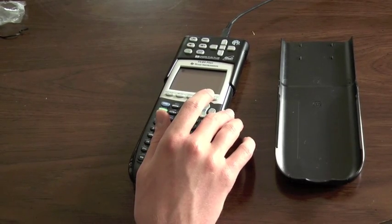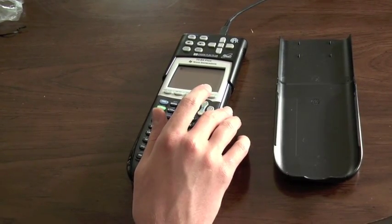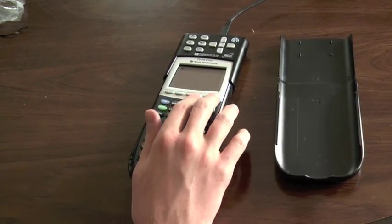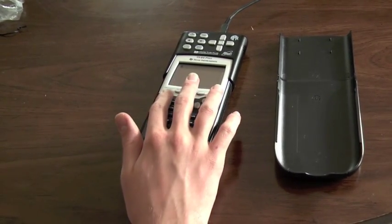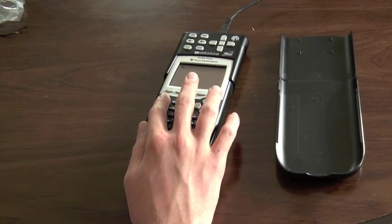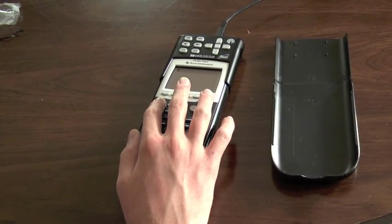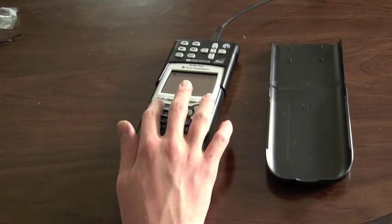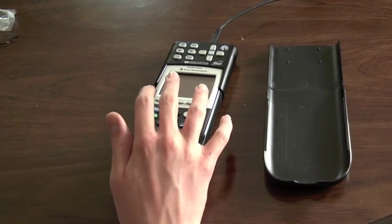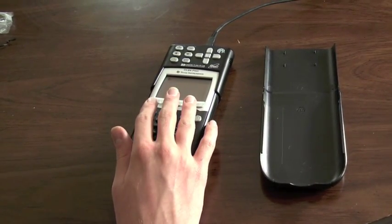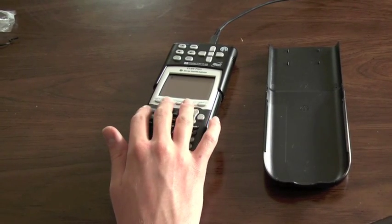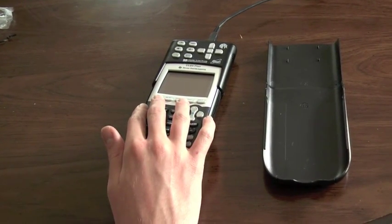To exit the help mode, or the key describer mode that we are currently in, you can simply press the second key three times again, like we did to enter this mode. Or you could press the power button that we used to turn the unit on, which would also exit the key describer mode. I'm going to press second three times. Help is now off, and we are back to where we were before we entered the help mode.